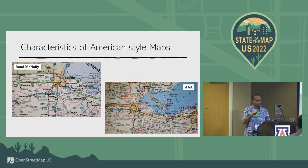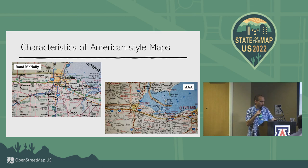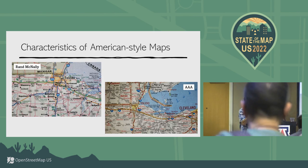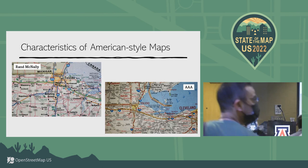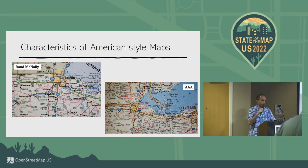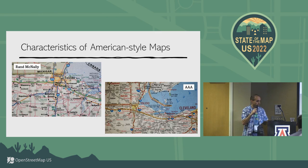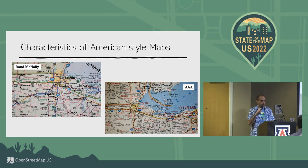I've put up a couple of examples of probably the two most prominent paper map manufacturers in the United States — Rand McNally and AAA. These are probably familiar to anyone that's looked at a paper map here, and I'm going to point out some features that are pretty common in American style maps.